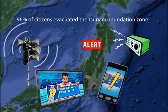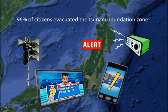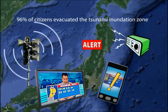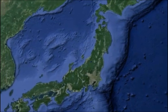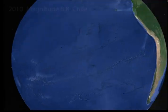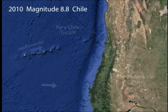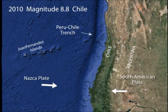Due to effective emergency education, 96% of the citizens evacuated the tsunami inundation zone to survive this natural disaster. Next, let's examine how deformation, as well as fault displacement, of the overriding plate can produce a tsunami.